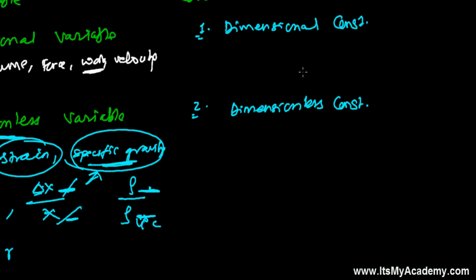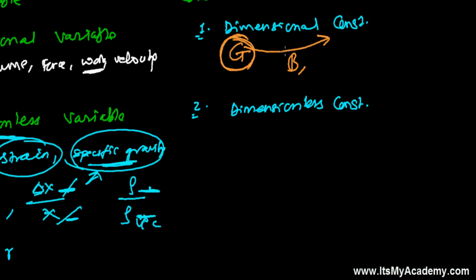Now let's look at dimensional constants. There are constants that have dimension and unit. For example, the universal gravitational constant, which we recently learned, has a unit and dimension but a constant value. Similarly, Boltzmann constant has a fixed value but still has dimension. Planck's constant also has a constant value but still has dimension and unit.